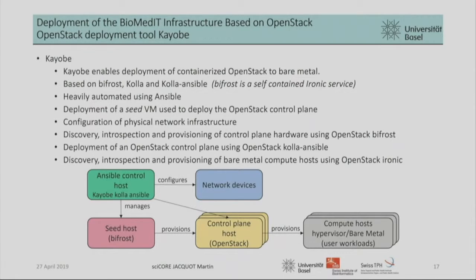How long does it take? Two to three days to deploy the whole OpenStack — assuming the hardware is compatible and everything works as expected, in two days you have an OpenStack system up and running. It was quite fast, and because we have everything documented in the Ansible control host with all playbooks already run, we are able to redeploy quite fast and quite easily.